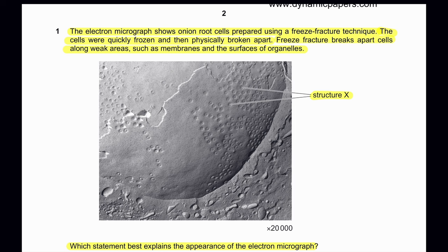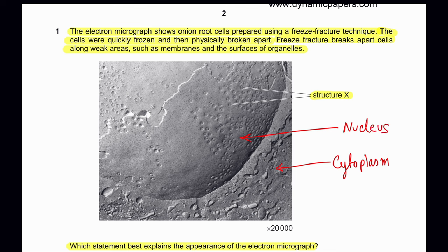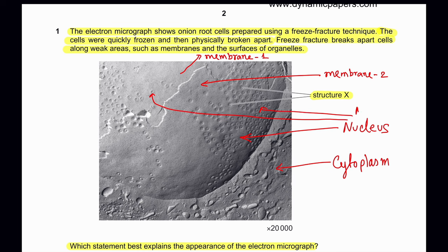Looking at the electron micrograph, we can see cell material — this is like cytoplasm — which makes this particular part an organelle. This could be the nucleus. We can say it's the nucleus because we see a double membrane: membrane 1 and on top of it another membrane, membrane 2. On top of the structure we can see structure X, which appears in both membranes. So it must be a nuclear pore.